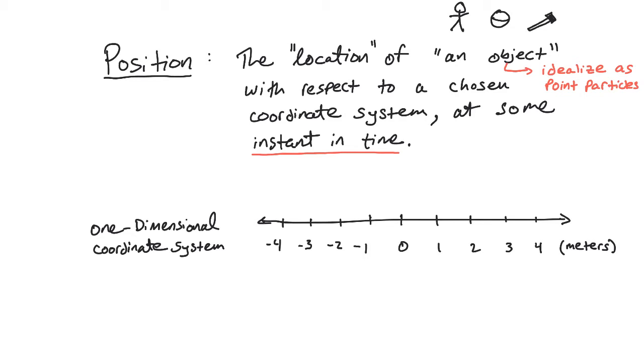is idealize all objects in physics as what are called point particles. So for example, like a hammer has a lot of its mass up here at the head of the hammer, and then the handle is pretty light,